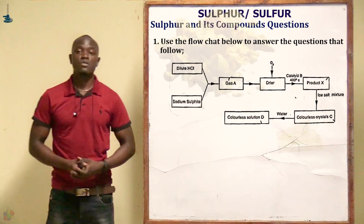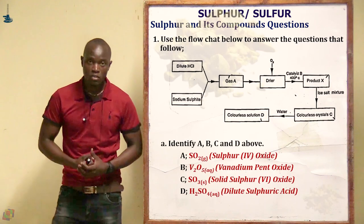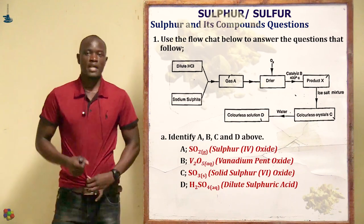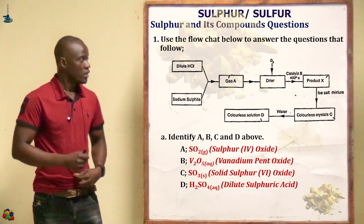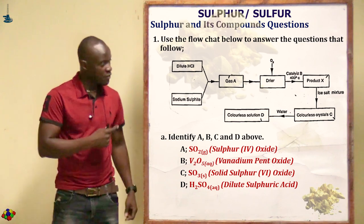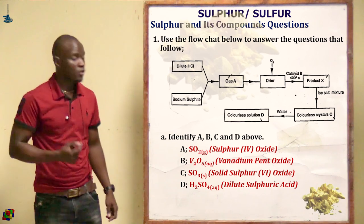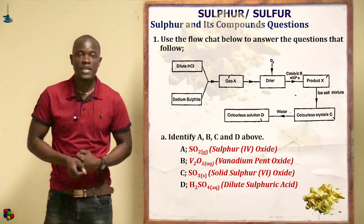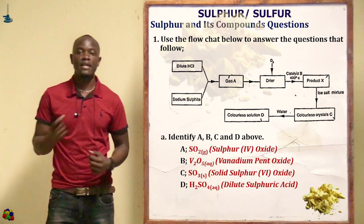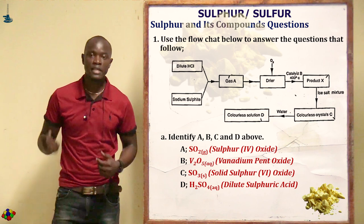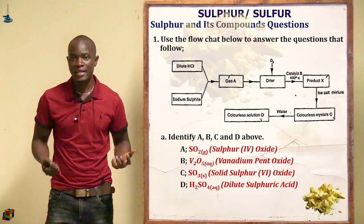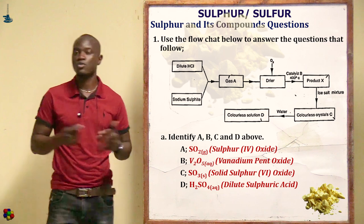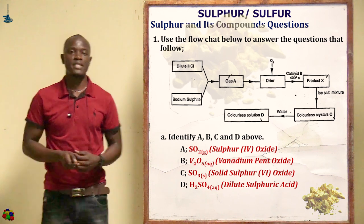Let's look at questions on sulfur and its compounds. The first question asks us to study the flowchart diagram. In this diagram, hydrochloric acid reacts with sodium sulfite, forming gas A. The gas enters a dryer, then passes through a catalyst to give product X, and finally we have solution D.